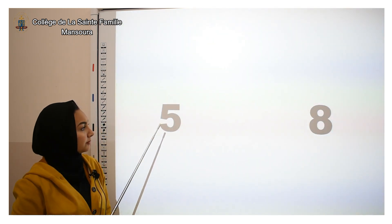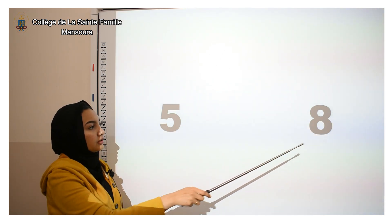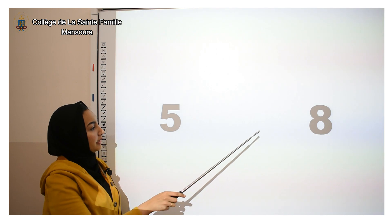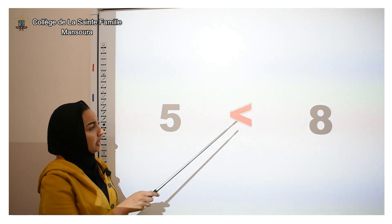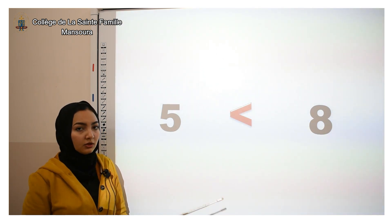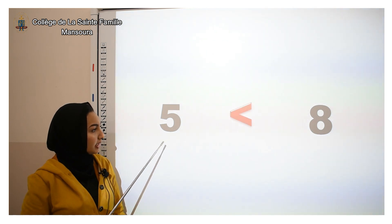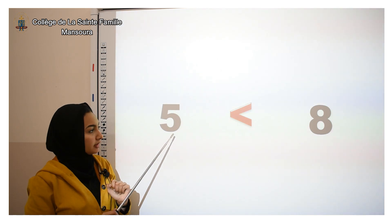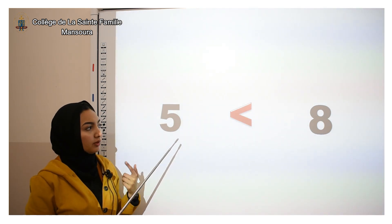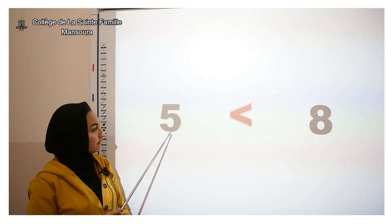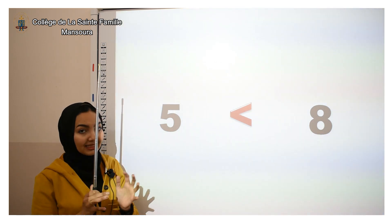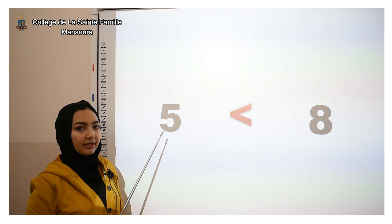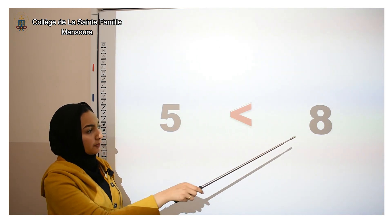Another one: five and eight. Which one is greater? Yes, eight. How can we read this? We start with the number that has less — the smaller number, which is five. So we are going to read this like: five is less than eight.